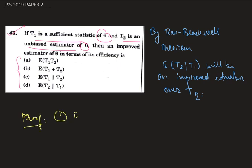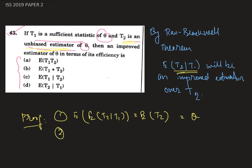First, we have to show that E(T2|T1) is also an unbiased estimator. The expected value of E(T2|T1) equals E(T2), which equals theta, since T2 is an unbiased estimator as given by the question. Therefore this estimator is already an unbiased estimator.